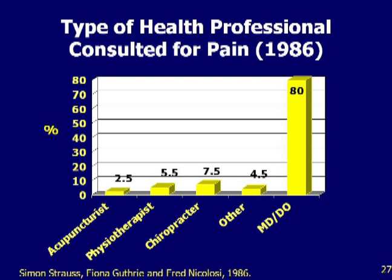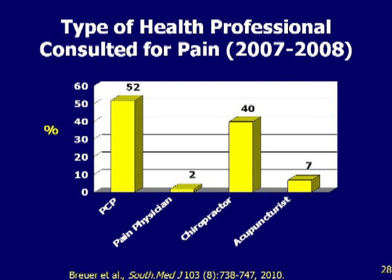This is 1986 data. At that time, pain medicine was not a subspecialty, and physicians predominantly treated almost all pain, with chiropractors a distant second. A more recent study found that pain patients are treated by primary care physicians, followed closely by chiropractors, and 7% by acupuncturists — so complementary medicine is really catching up. Pain physicians, however, take care of only 2% of pain patients.